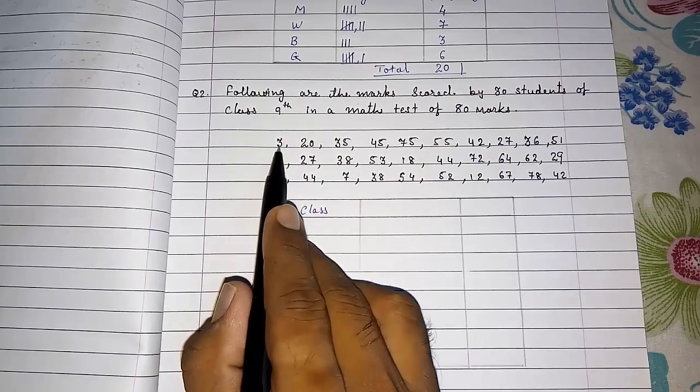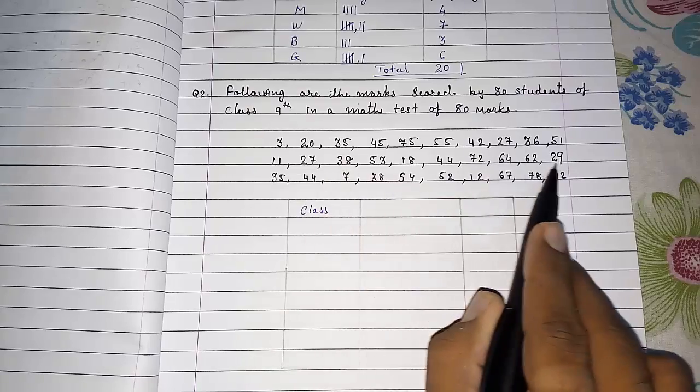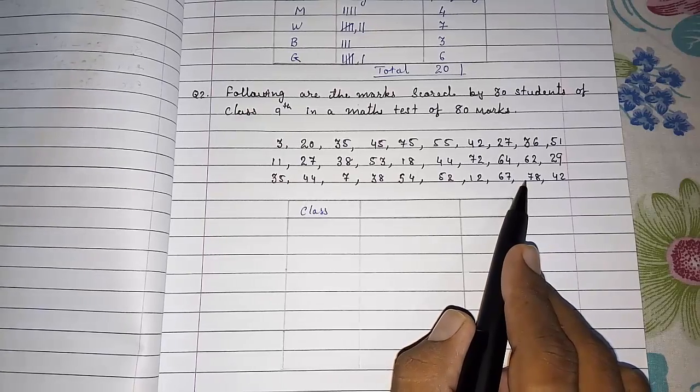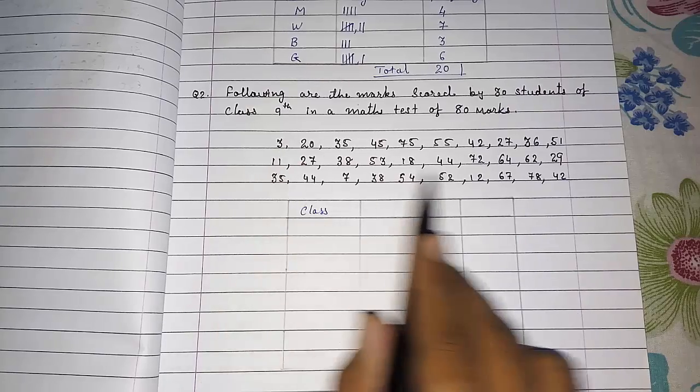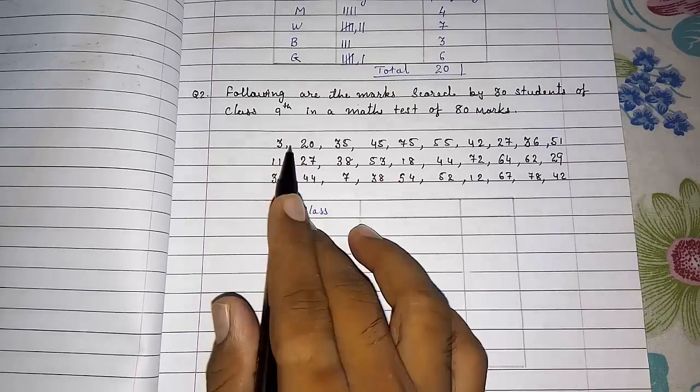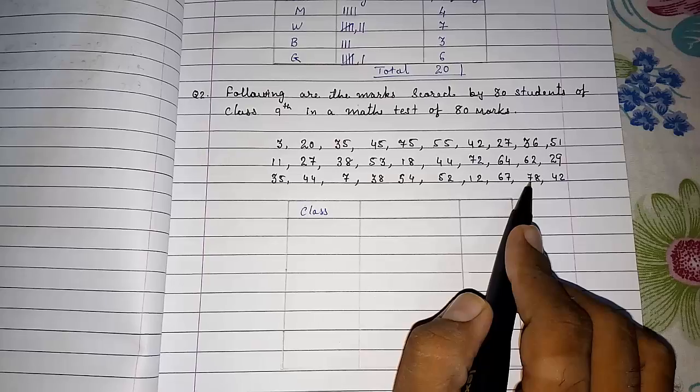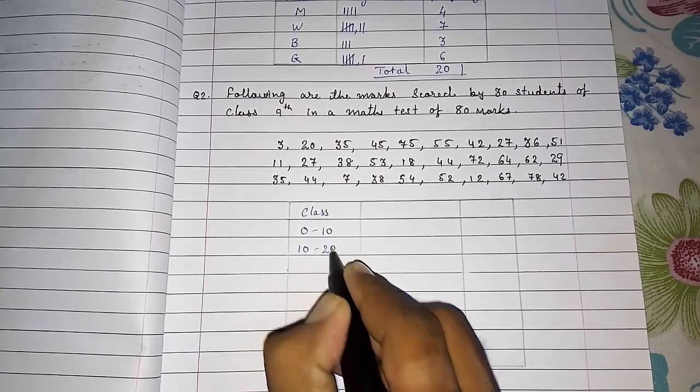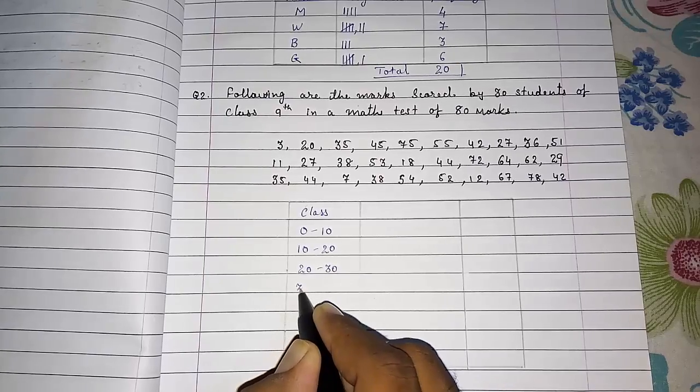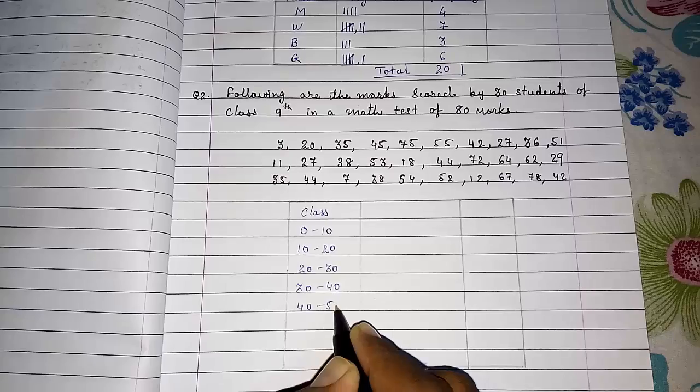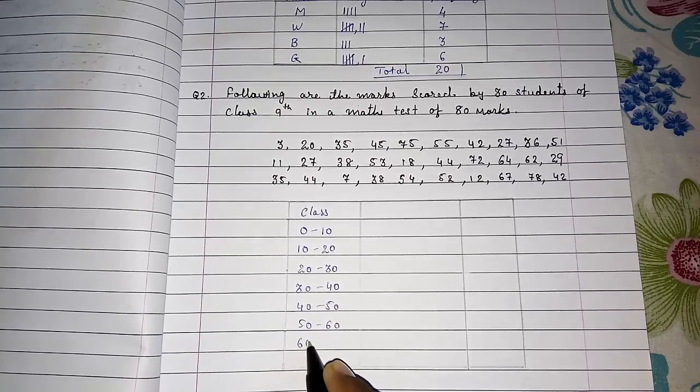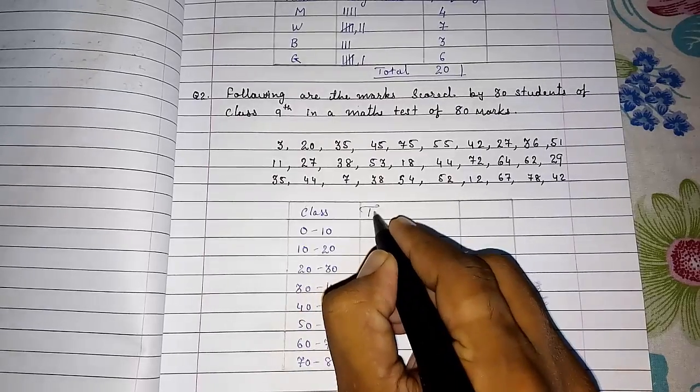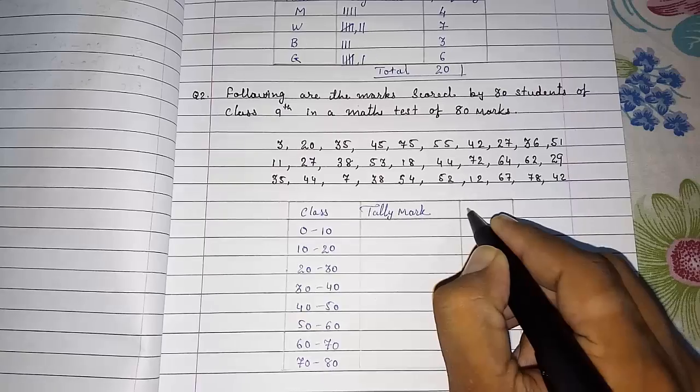Eighty marks is their highest. Lowest mark is three and among this highest is seventy-eight. So from three to seventy-eight, big gap is there. We can make group of five or ten, but if we make five we will get more than ten groups. So we will take a group of ten. We will divide it into zero to ten, ten to twenty, twenty to thirty, thirty to forty, forty to fifty, fifty to sixty, sixty to seventy, and the highest is seventy-eight so up to seventy to eighty.